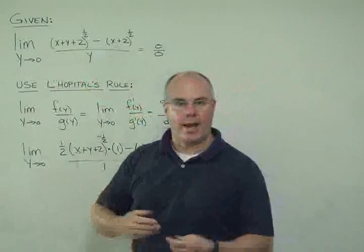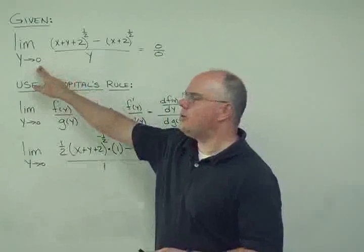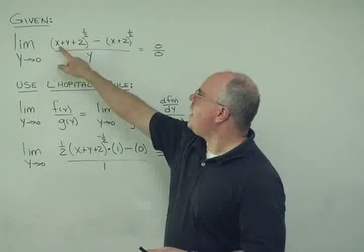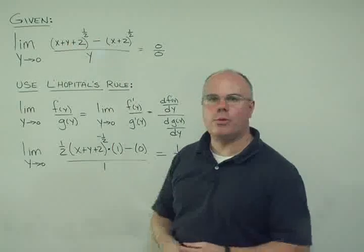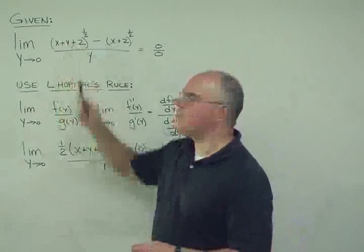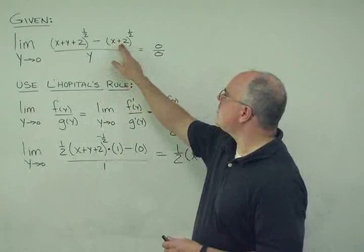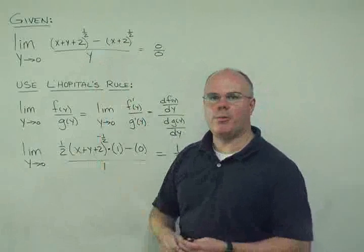So we're given, we're asked to take the limit as y approaches zero of (x+y+2)^(1/2), or the square root of this quantity, minus (x+2)^(1/2), all divided by y.